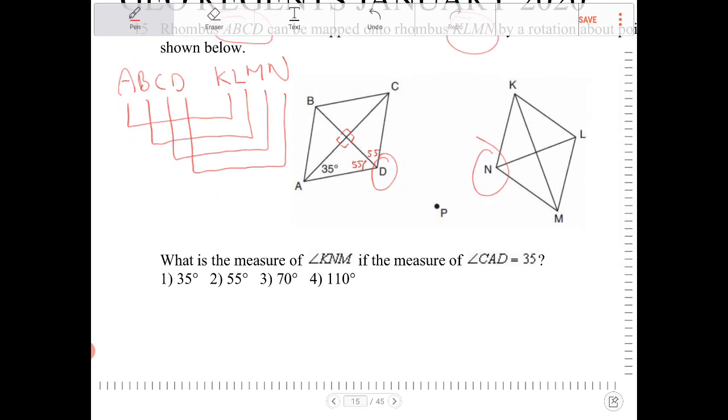So, if I'm looking for angle KNM, that will be congruent to angle CDA. And CDA measures 110. So angle CDA is equal to 110, and that is equal to KNM. So that would be option 4.